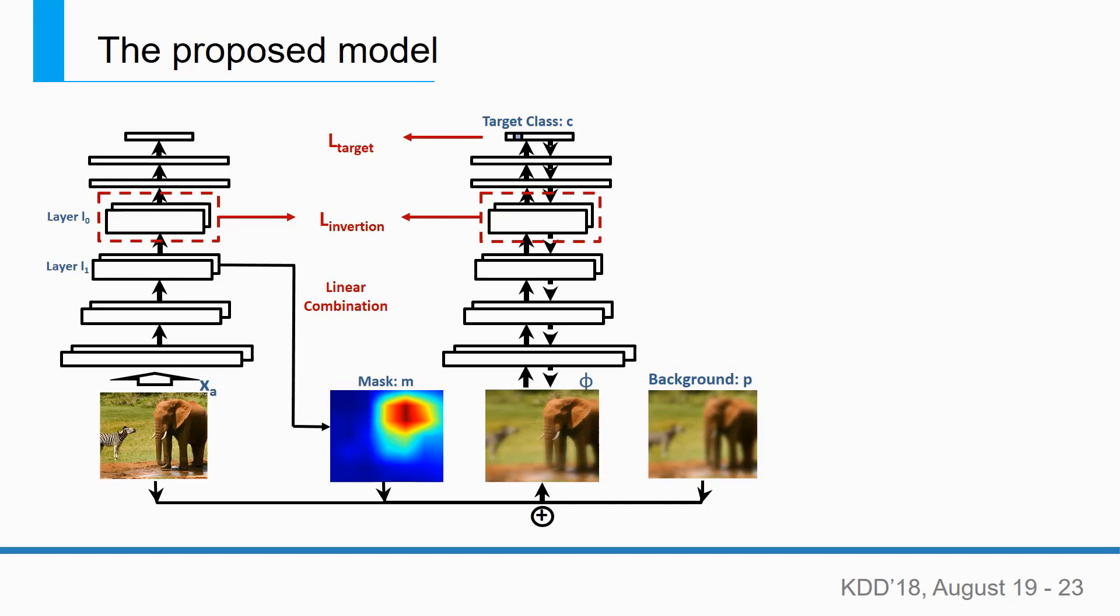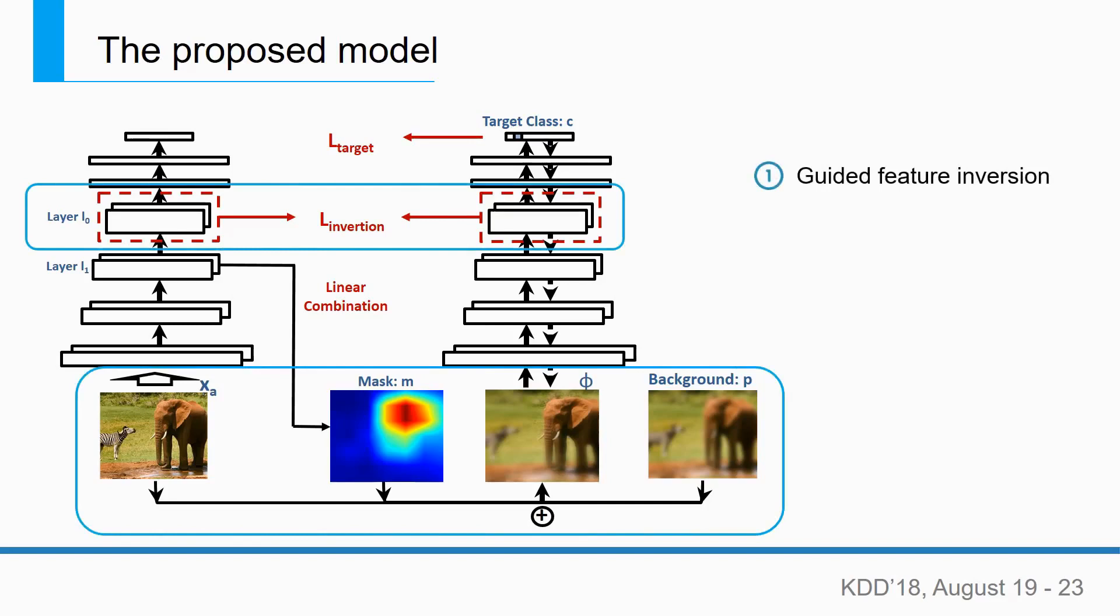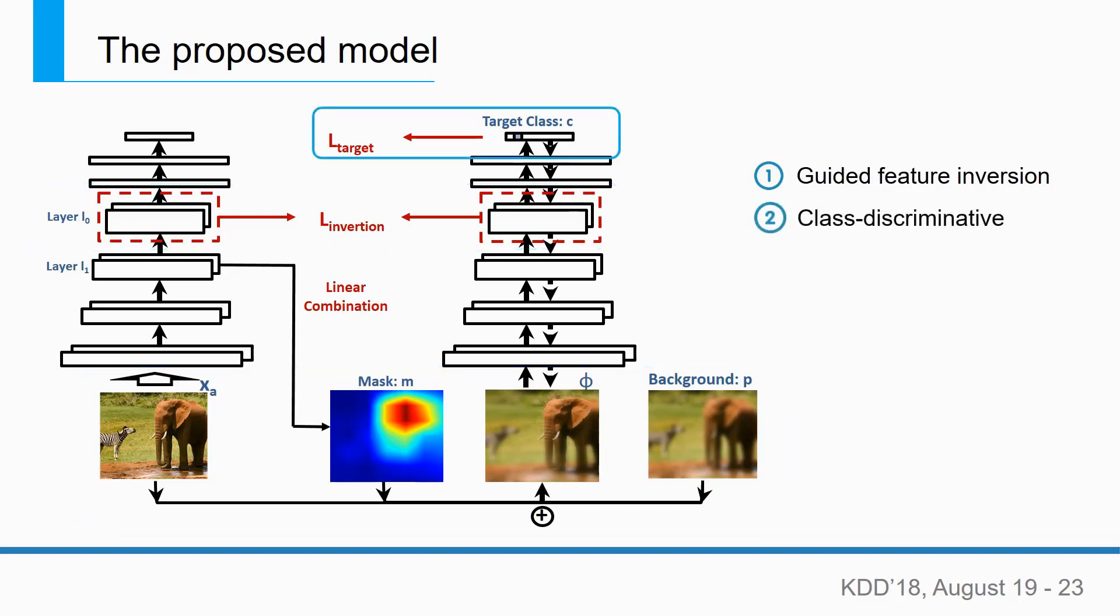Here is an illustration for our proposed framework. We present Guided Feature Inversion to preserve the object localization information in a mask to provide insights of what information is actually employed by the deep neural network for the prediction. We further establish connections between the input and the target object to make the interpretations more class discriminative.